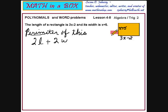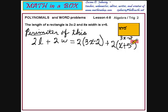The length is 3x minus 2, so we will have 2 times 3x minus 2 plus 2 times x plus 5. Now, we can simplify this. This is a polynomial of degree 1.